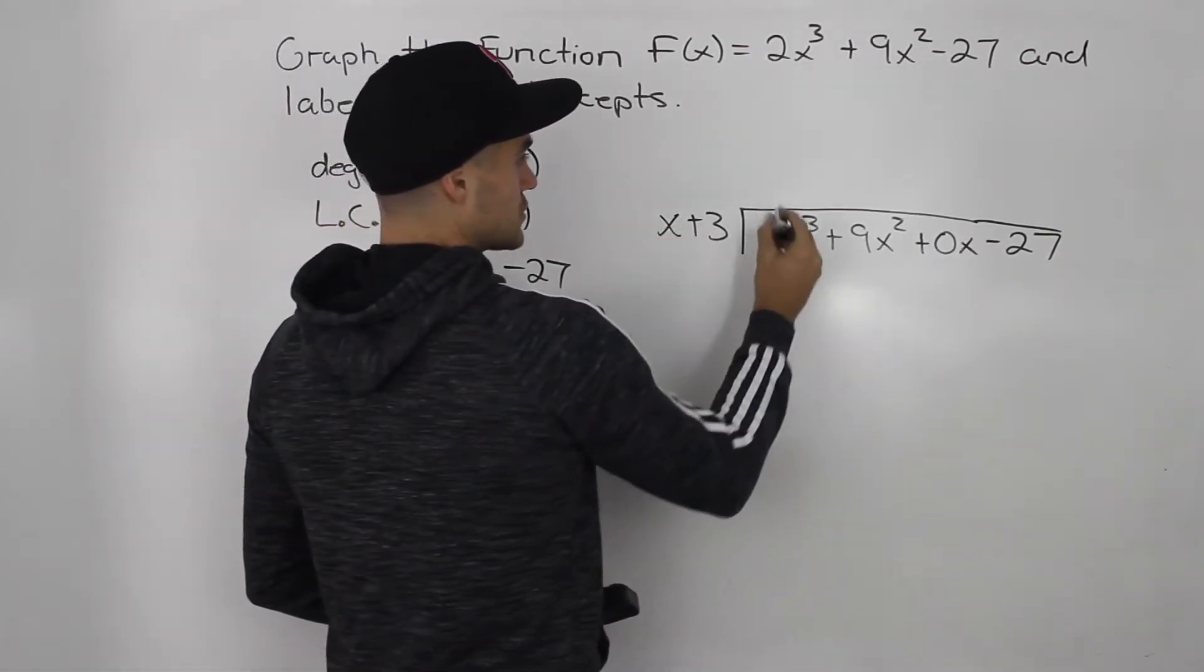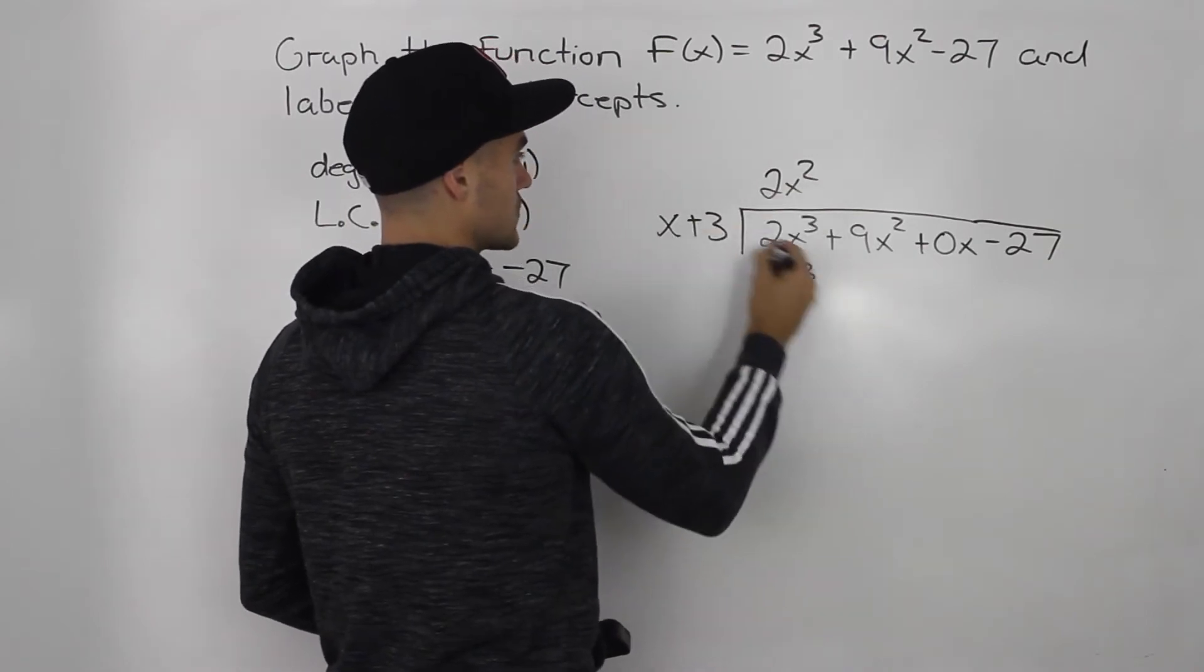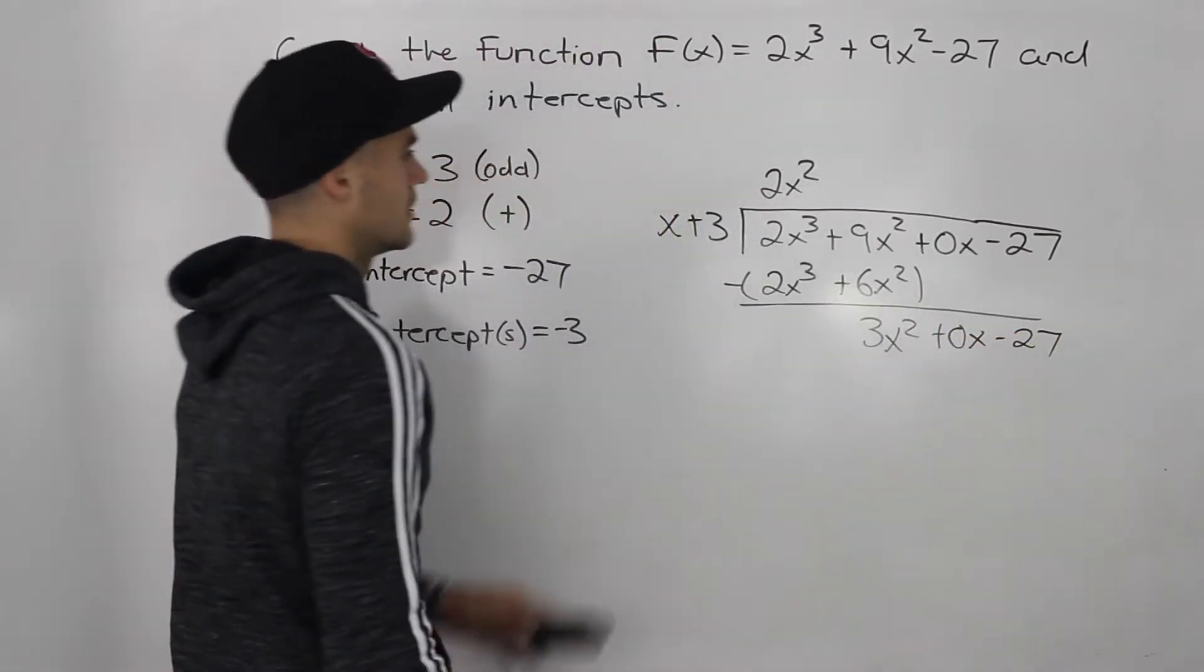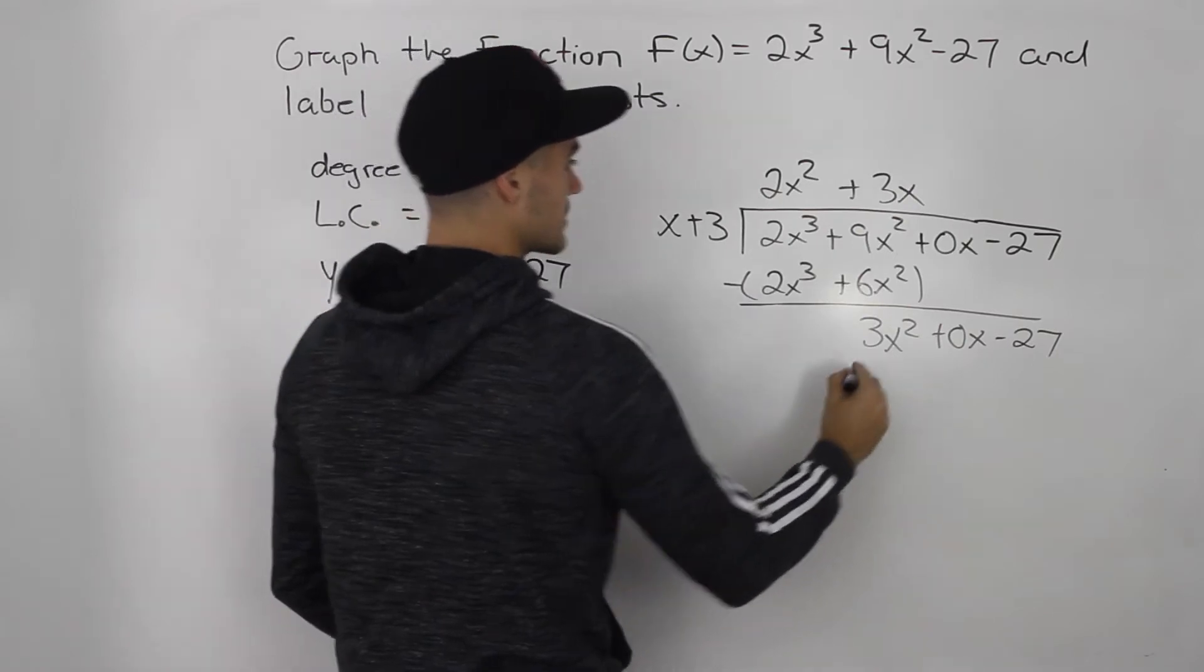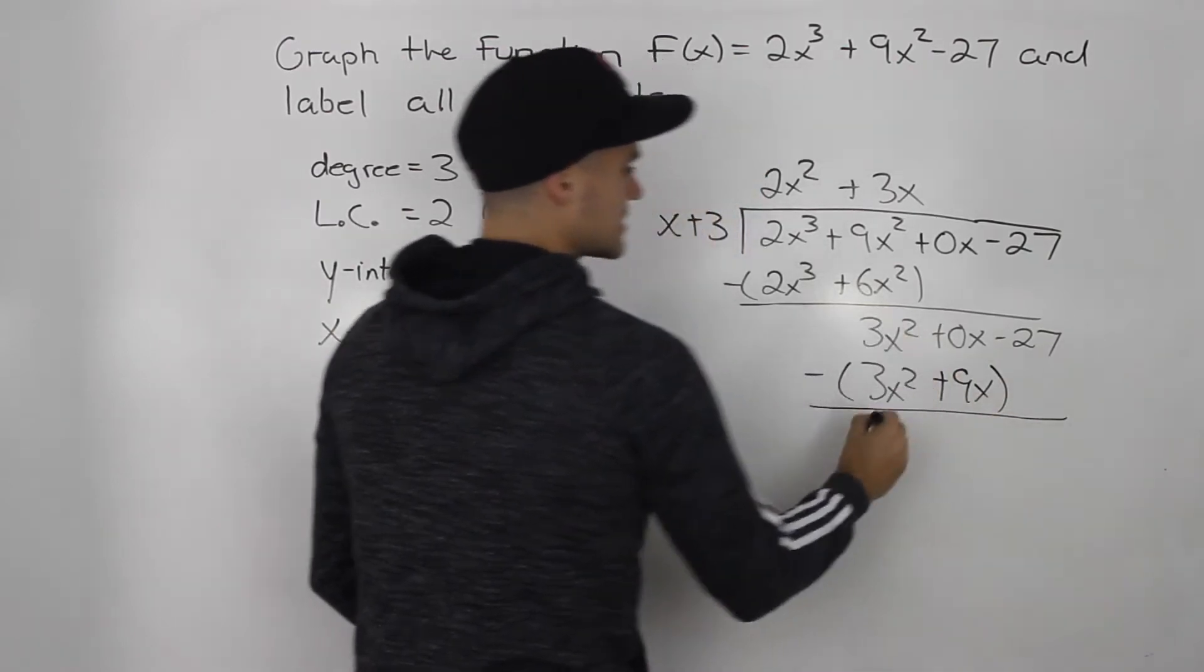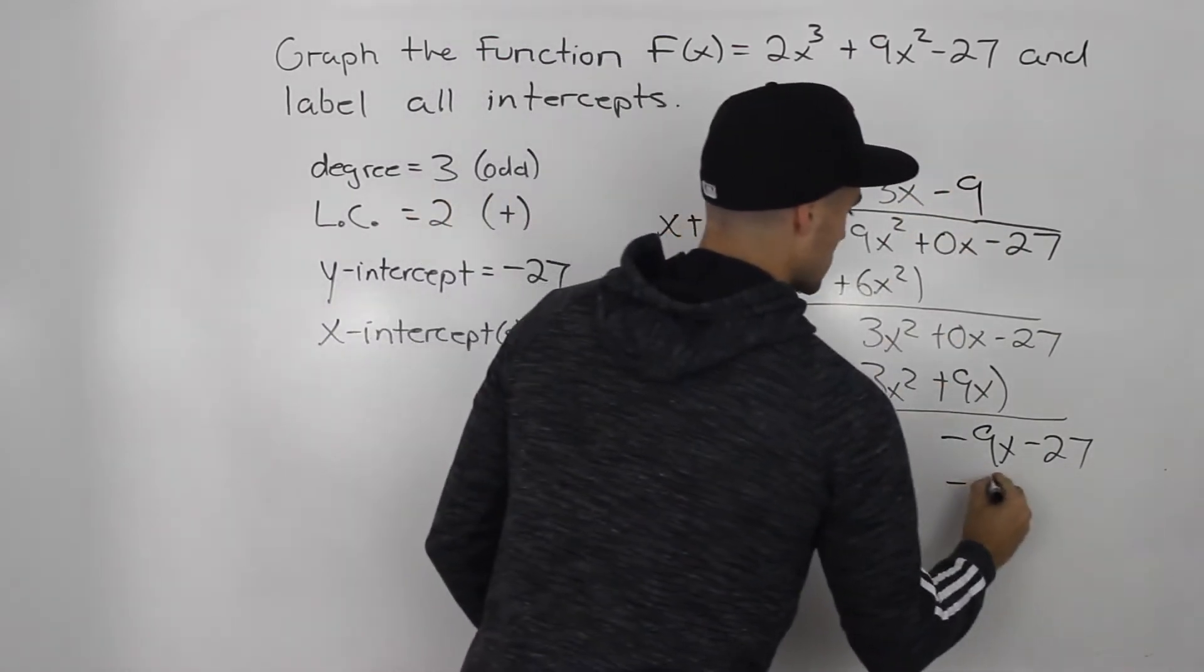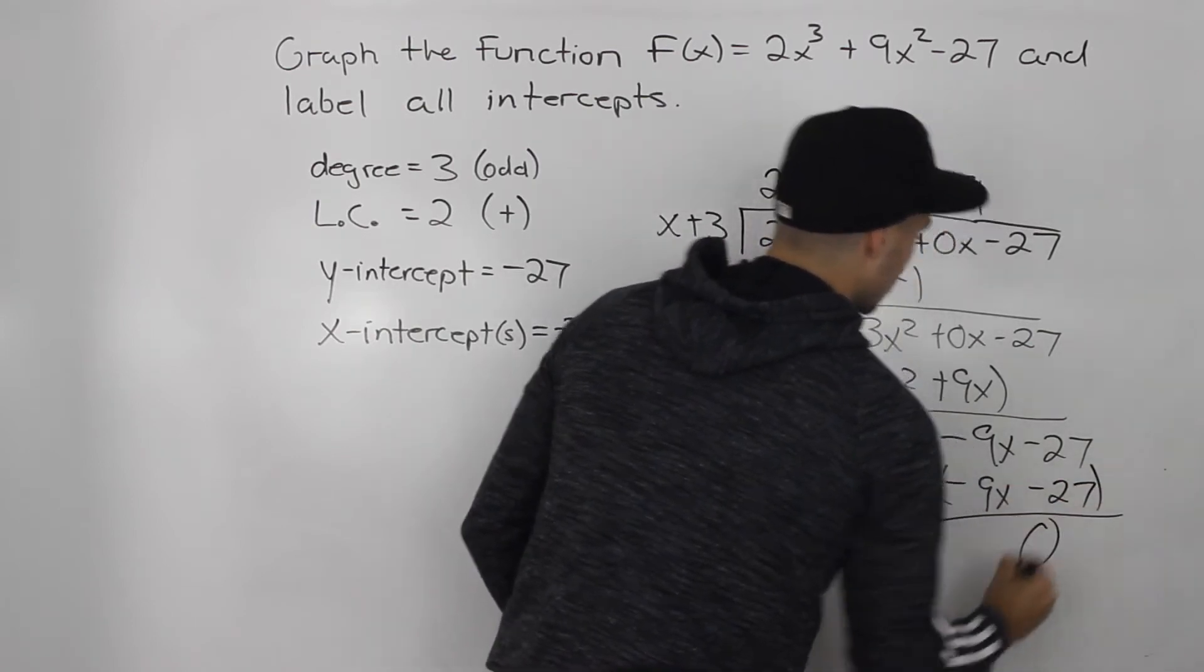How many times does x go into 2x³? Well, it goes in 2x² times. 2x² times x gives us 2x³. 2x² times 3 gives us 6x². When we subtract these, we'd end up with 3x². How many times does x go into 3x²? 3x times. 3x times x gives us 3x². 3x times 3 gives us 9x. When we subtract these, 0x minus positive 9x gives us negative 9x minus 27. How many times does x go into negative 9x? Negative 9 times. So then we'd be left with negative 9x. Negative 9 times 3 gives us negative 27. When we subtract these, we get a remainder of 0.